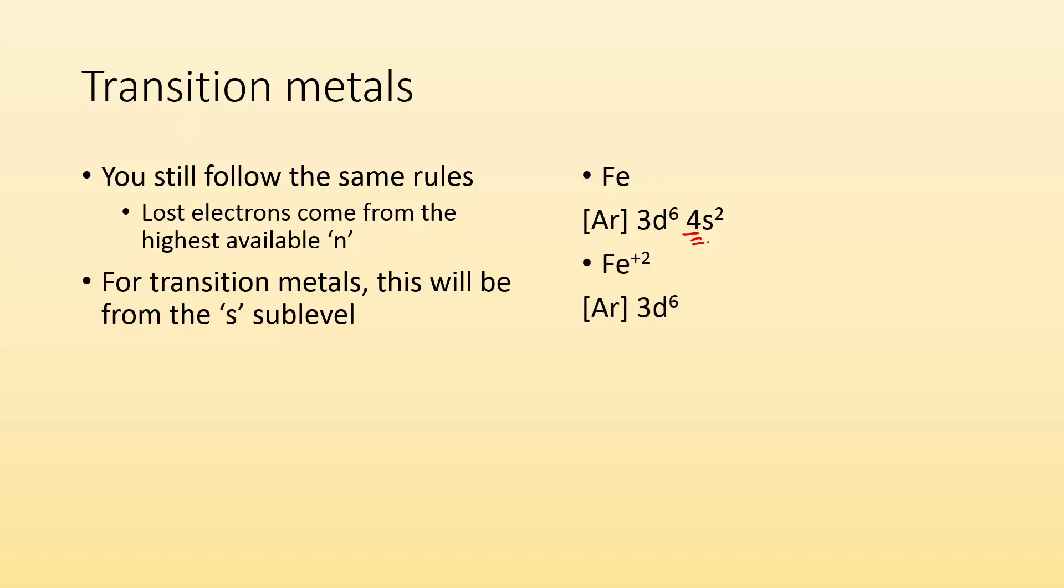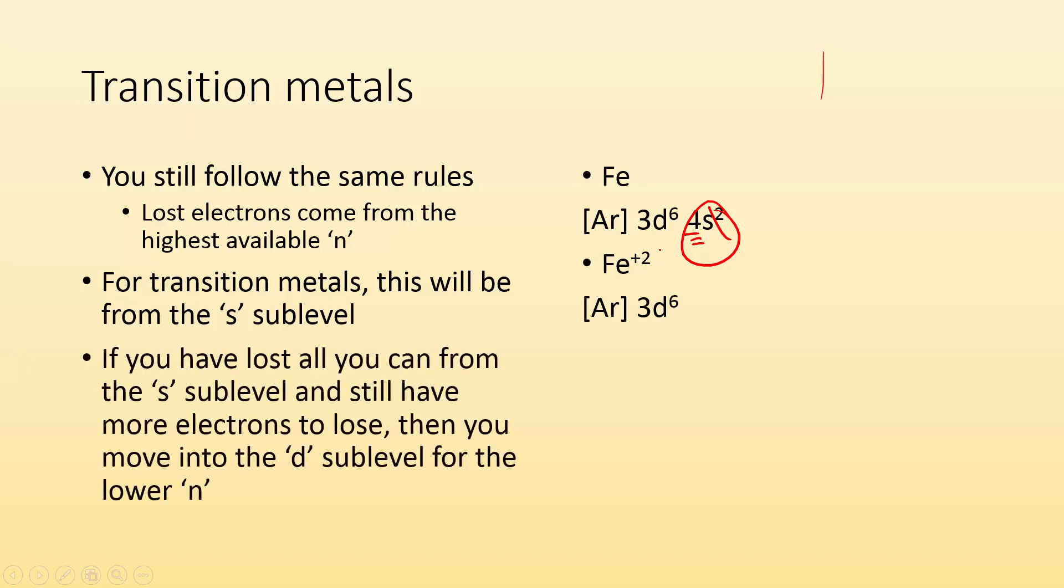And typically, for transition metals, it will be the S sub-level for the highest principal energy level. So to become Fe plus 2, we more or less just lose these two electrons, and we're left with Ar 3d6. If we have to lose more electrons, then we're going to move into the D sub-level of the lower n, because now that's the highest energy level available.